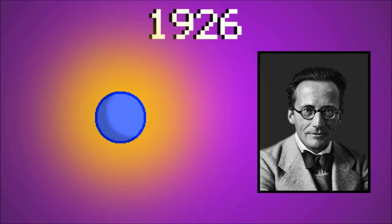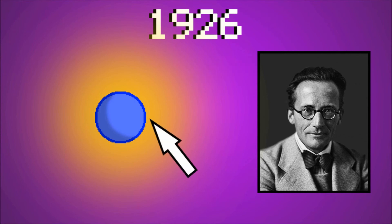For instance, an electron could be infinitely far away from the nucleus, but it is much more likely to be much closer to the nucleus. This is more or less the model we use today.